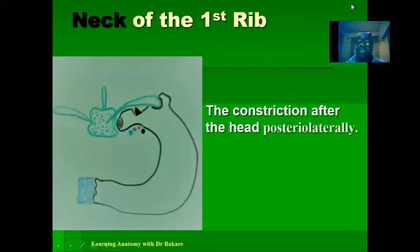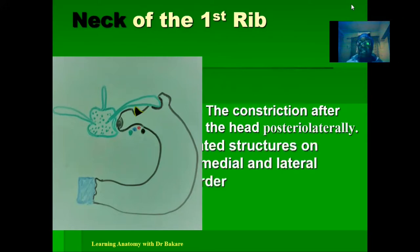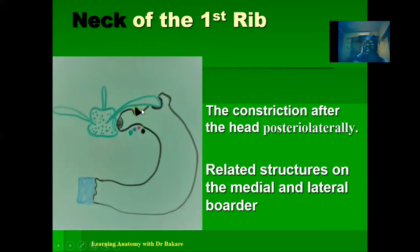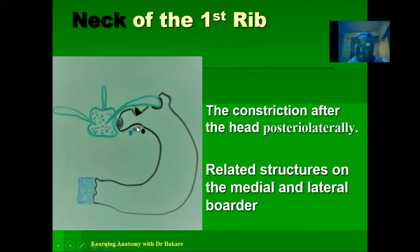After the head, we have the neck. The neck is the constriction seen after the head, directed posterolaterally. On both the medial border — the border closer to the median plane — and the lateral border, we see distinct structures located around this region.